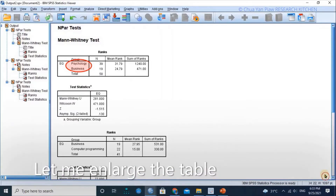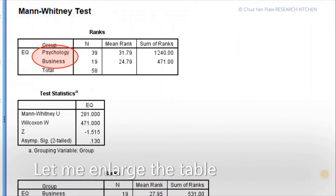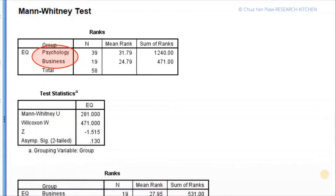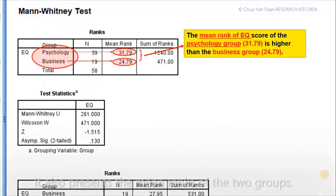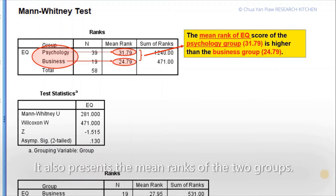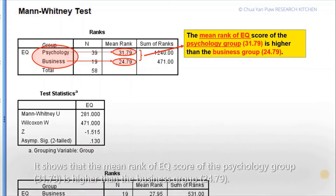Let me enlarge the table. The first rank table presents the subsample size of the psychology group, which is 39, and the subsample size of the business group, which is 19. It also presents the mean rank of the two groups. The mean rank of EQ score of the psychology group, 31.79, is higher than the business group, 24.79.